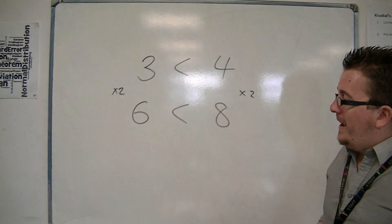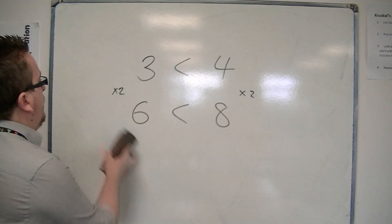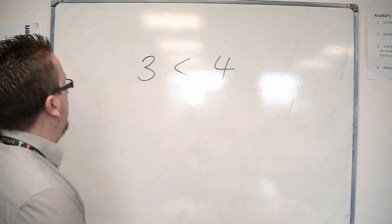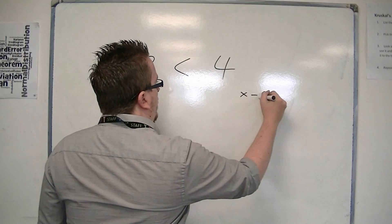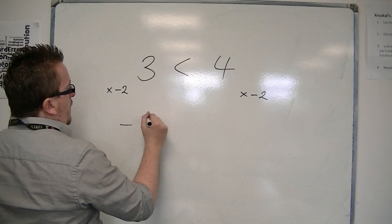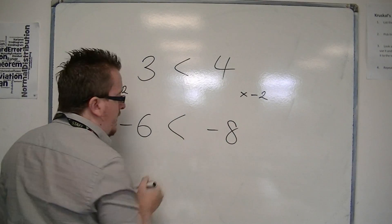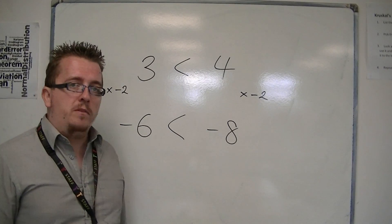If, on the other hand, I had instead multiplied both sides by a negative number, so if I said I multiplied both sides by minus 2, then what happens is we get minus 6 and minus 8. But we know that minus 6 is not less than minus 8.